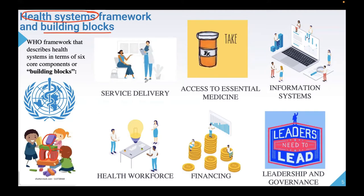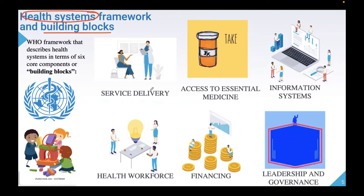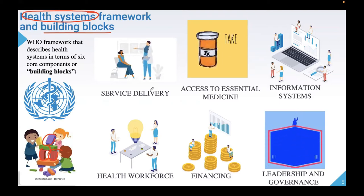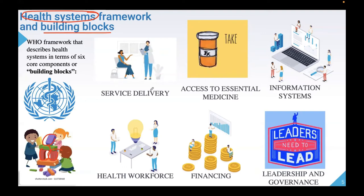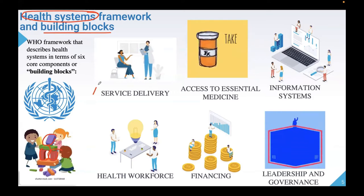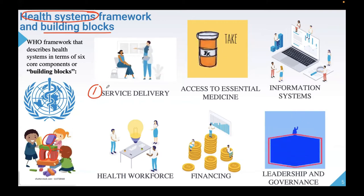Building block number one is service delivery. Good service delivery comprises quality, access, safety, and coverage. It is important to strengthen our service delivery because it is crucial in achieving your SDG or sustainable development goals. We have to ensure the availability of health services that meet a minimum quality standard — providing quality services to our stakeholders.